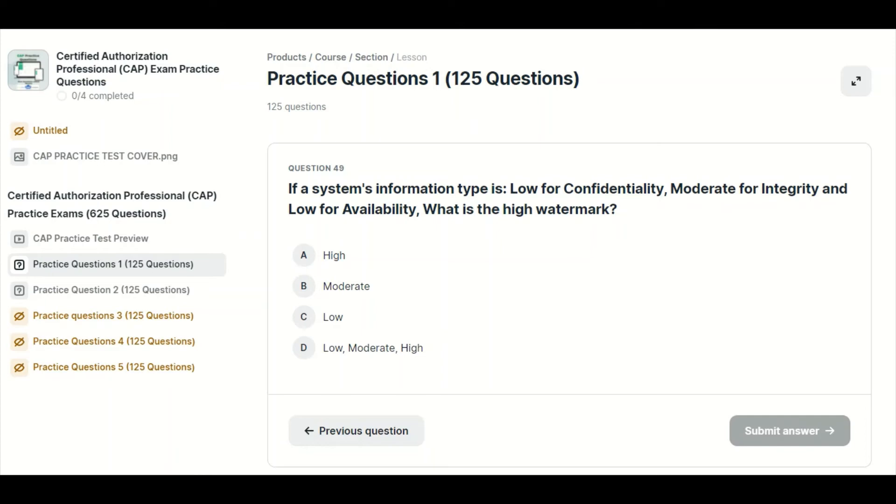If a system's information type is low for confidentiality, moderate for integrity, and low for availability, what is the high watermark? So let's see, we've got low, moderate, low. The high watermark would be moderate.